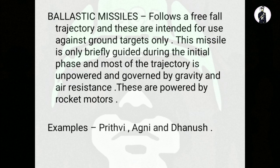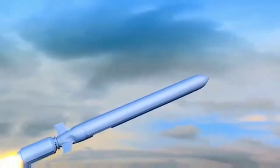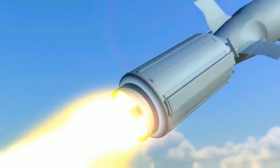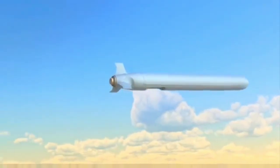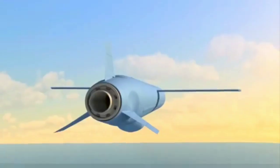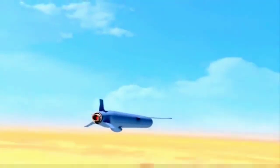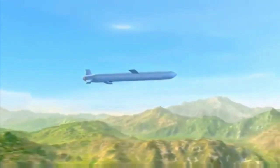In the case of cruise missiles, these are aerodynamically guided, remain within the Earth's atmosphere, and fly at approximately constant speed throughout the flight. They have better accuracy and therefore are used against high-value targets at long ranges, like ships, bridges, dams, and communication centers, because they have low error probability. These missiles are capable of traveling at supersonic speed, which means higher than the speed of sound.